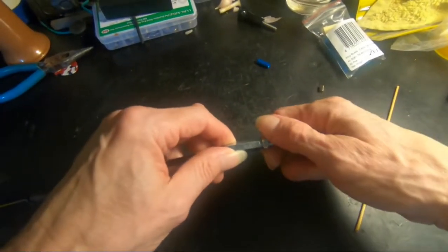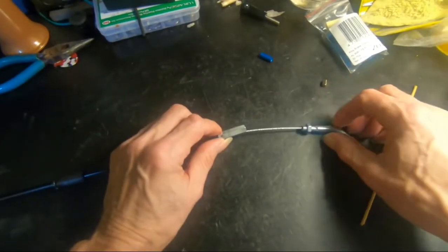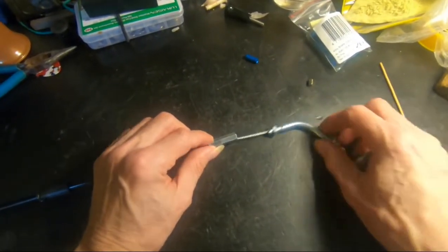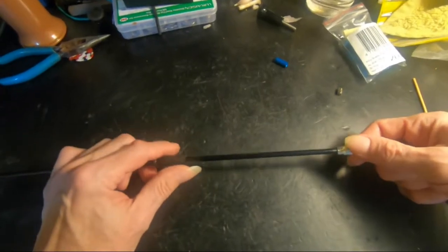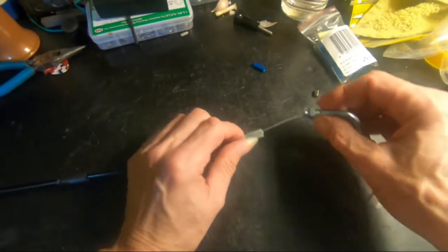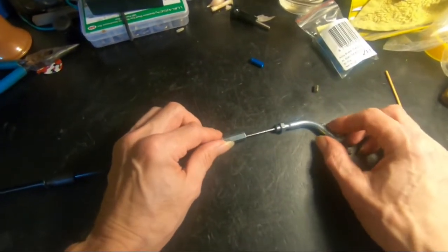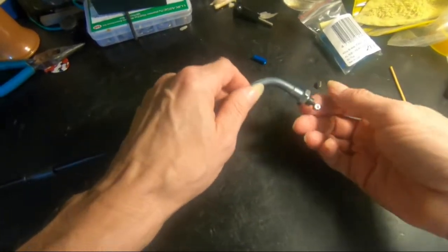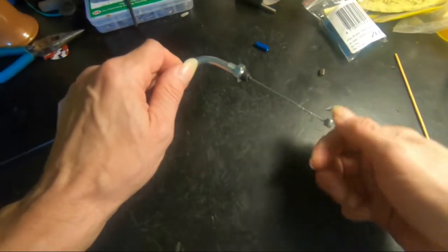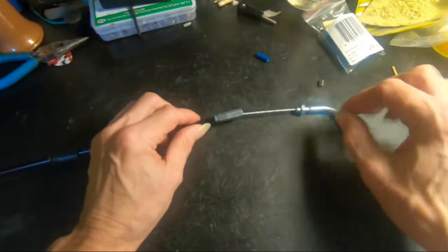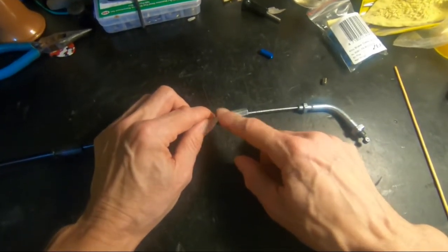I think this will work, so that's what we're going to do. Step one is to cut this off, get the cable out of there, and then cut this housing. These are cable housing cutters, but I don't really have good wire cutters big enough to handle this.